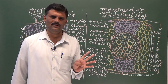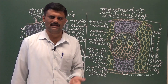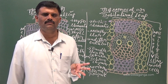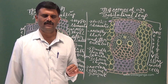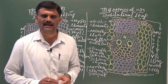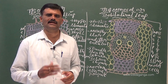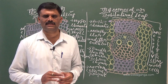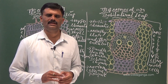We have discussed anatomical structures of dicot stem, monocot stem, dicot root, monocot root, dicot leaf, and monocot leaf. In the next class, we will study about secondary growth — secondary growth in dicot stem — why secondary growth occurs only in dicot stem and how it occurs.